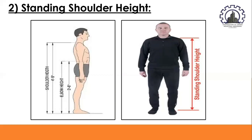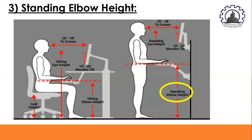Standing elbow height refers to the height above the ground of the elbows of a person standing erect. It is used to design the maximum allowable bench height for standing workers. For delicate tasks, bench heights can be slightly higher than elbow height so that workers can stabilize the forearm by resting it on the bench.